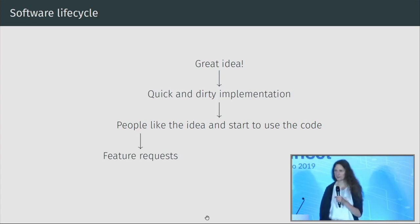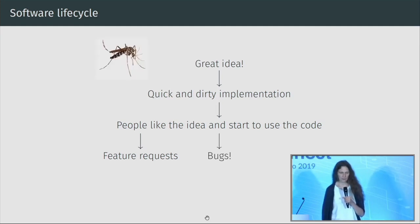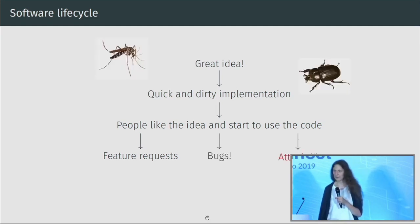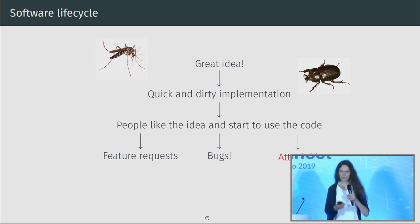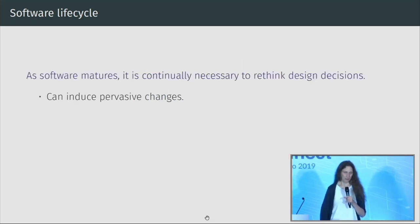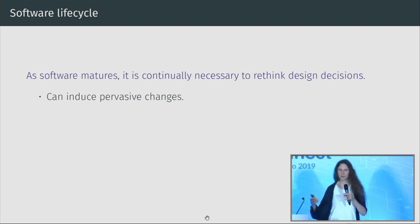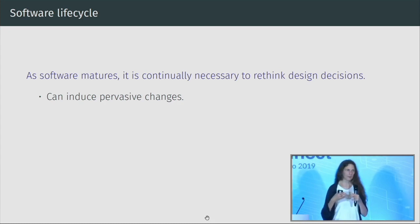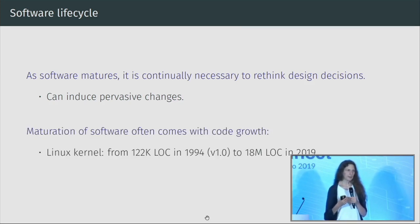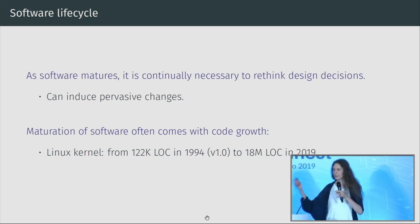When people start using your code, they want new features, they also find bugs, and when your software gets really popular, people start to attack it. We would like to help people deal with this situation after their software has become popular — they have more bugs, need to evolve it, and can't live with that quick-and-dirty implementation anymore. They have to rethink design decisions to make something stable and robust.